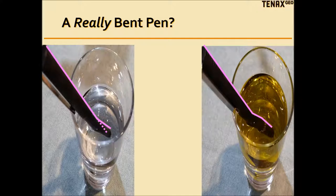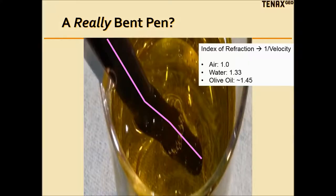Now I've added oil, which floats on top of the water. Instead of being bent once, the pen is bent twice. The oil really bends the light. Light moves even slower in oil than it does in water.